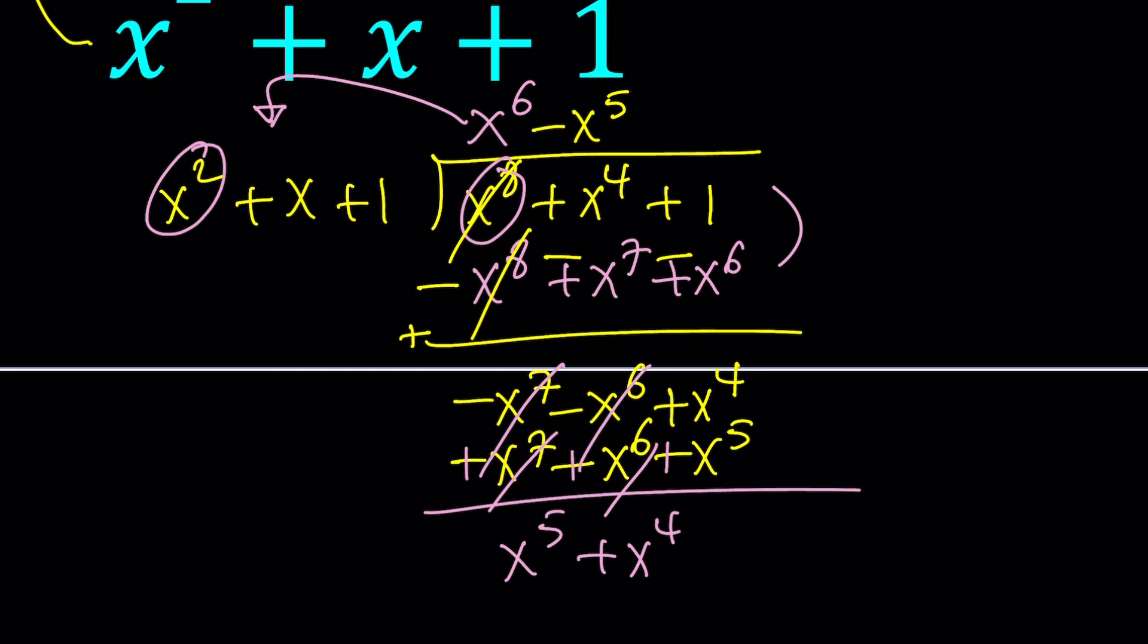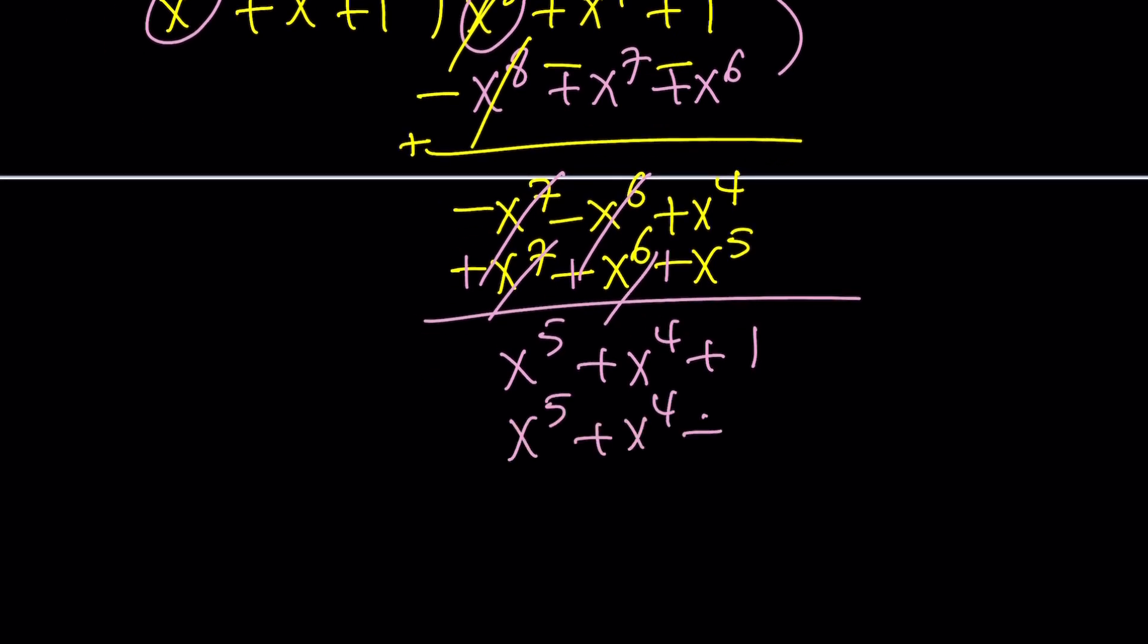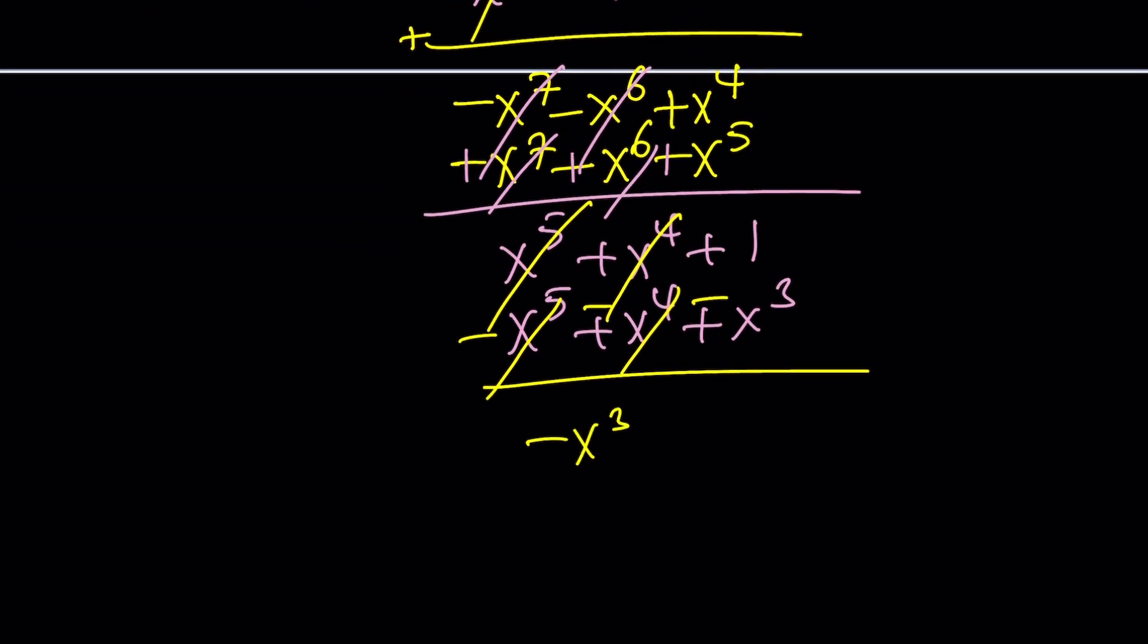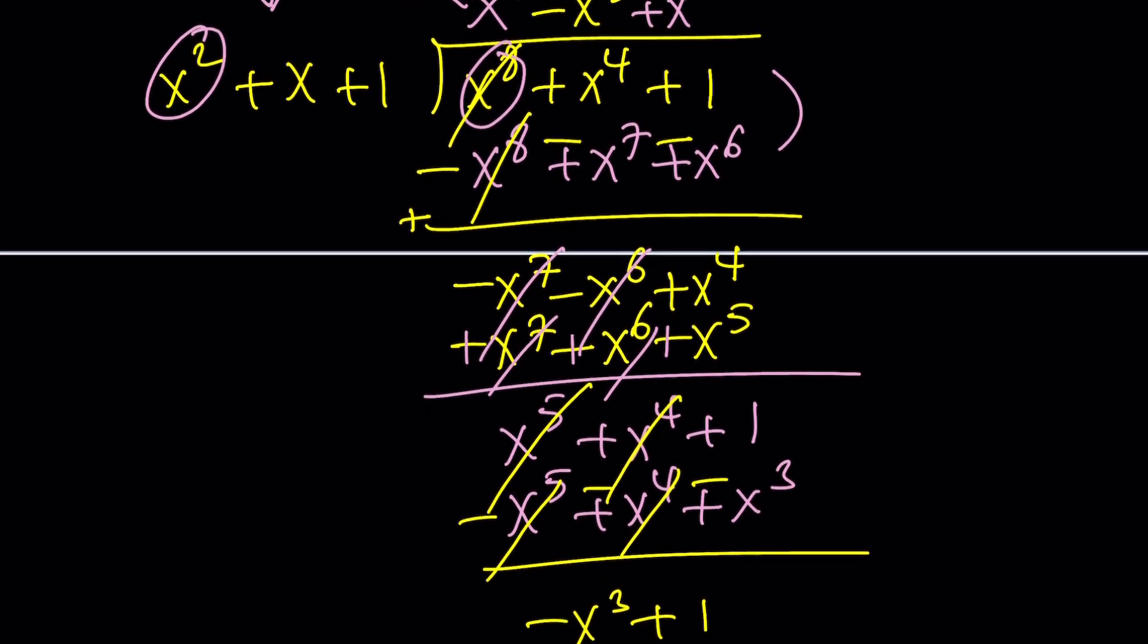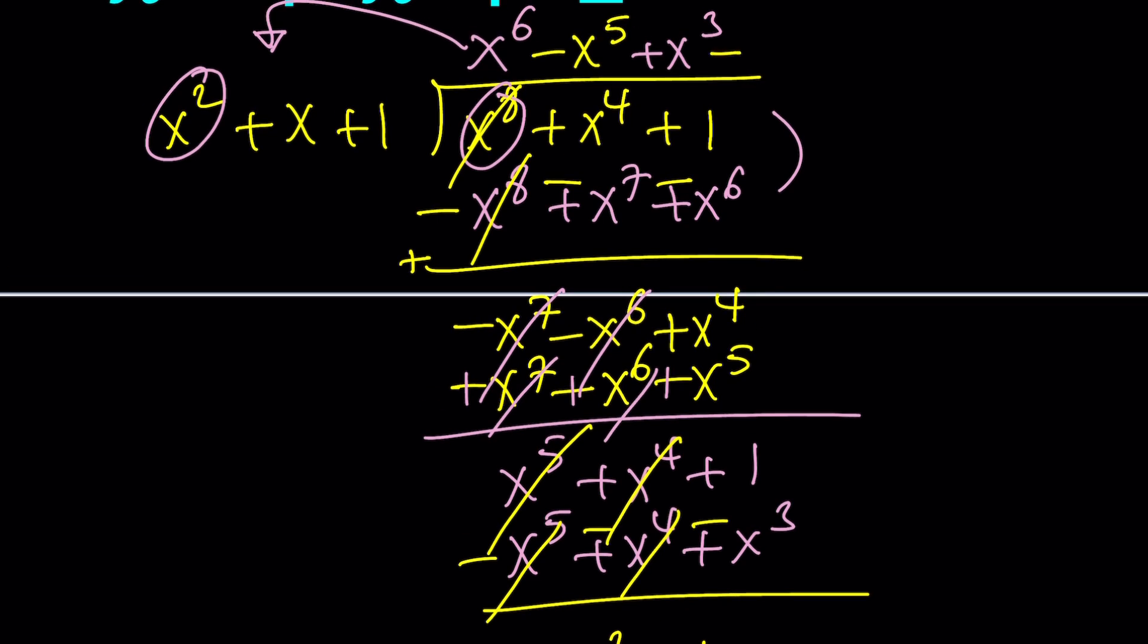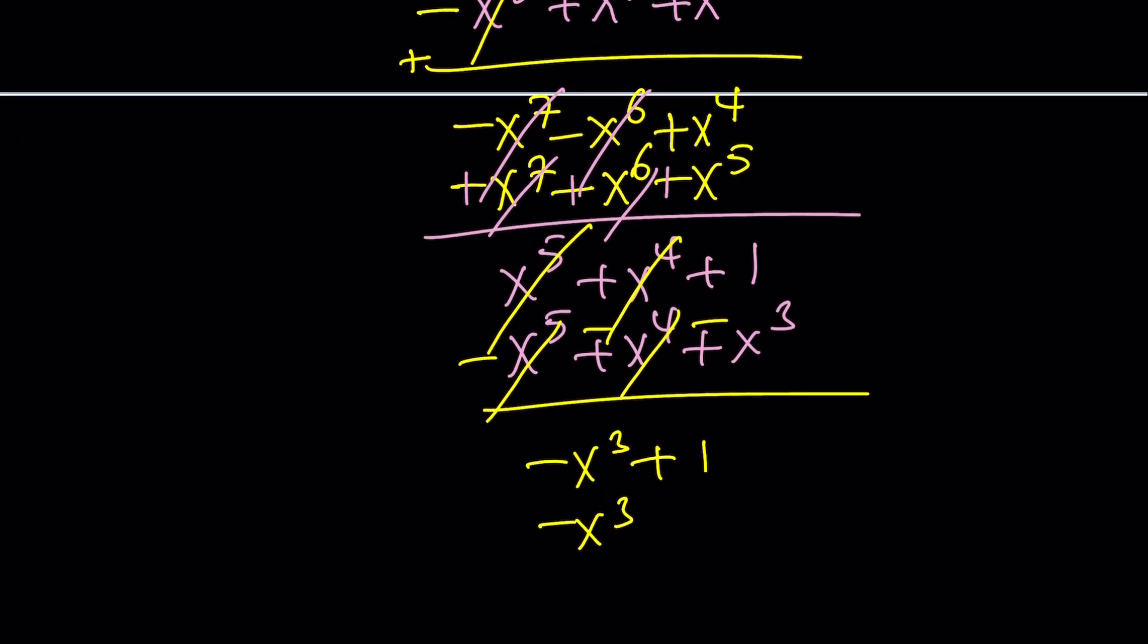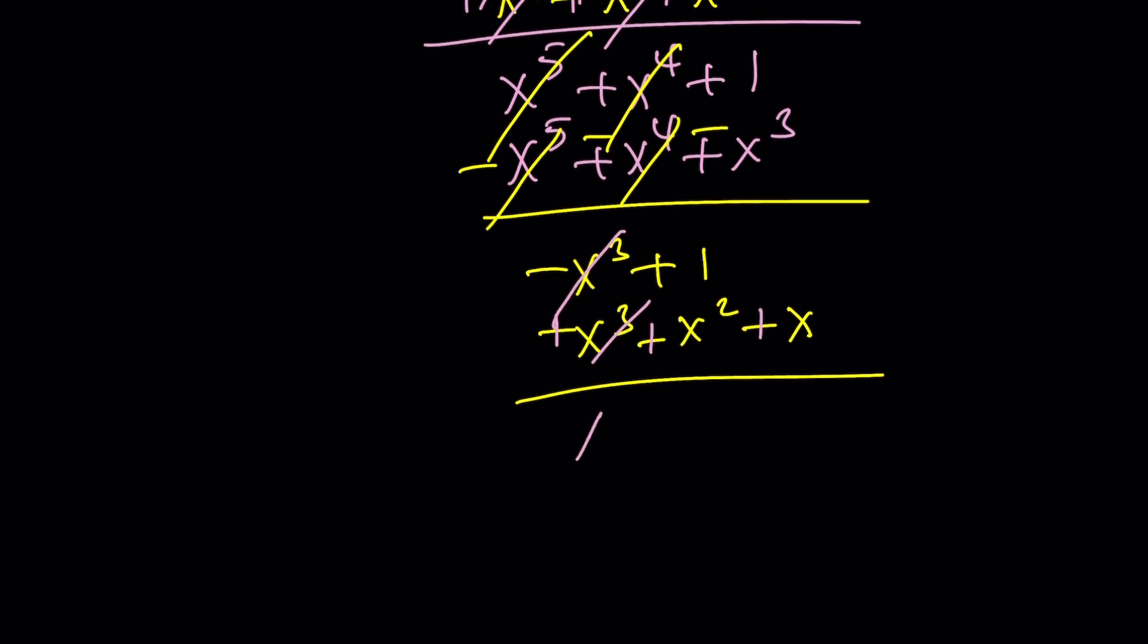And then of course there's a plus 1, which we're not going to use right away. Now we're going to check whether x squared goes into x to the 7th, I mean negative x to the 7th. And it does. And it's negative x to the 5th times. We're going to distribute, as you know, we're distributing in negative terms, so be careful about that. And then we have to negate next. This is going to cancel out. This is going to cancel out. We're going to end up with x to the 5th plus x to the 4th.